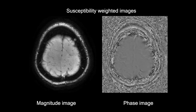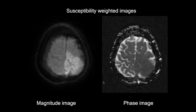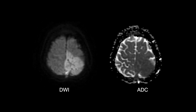On susceptibility weighted images, there is no evidence of hemorrhage or calcification within the lesion. On diffusion weighted imaging, the lesion shows diffusion restriction with a corresponding decrease in the ADC value, reflecting the high cellularity of the tumor.